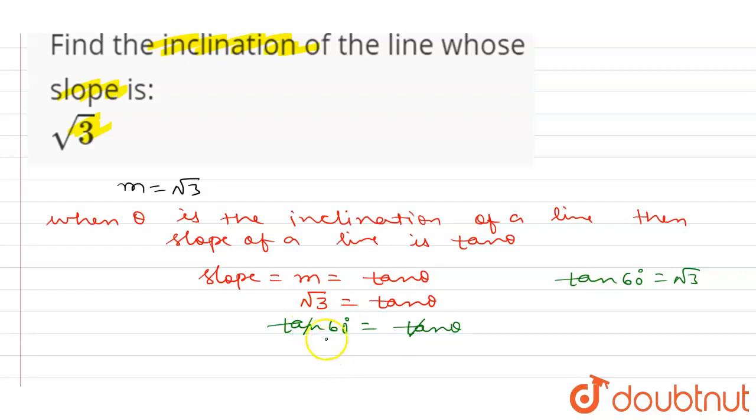So tan and tan gets cancelled, so from here I can say that θ equals to 60 degree. Okay, so the inclination is at 60 degree.